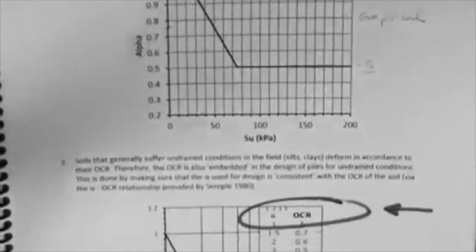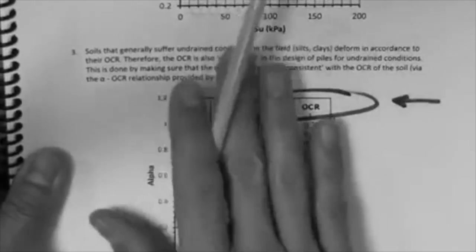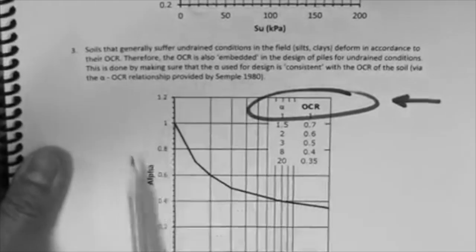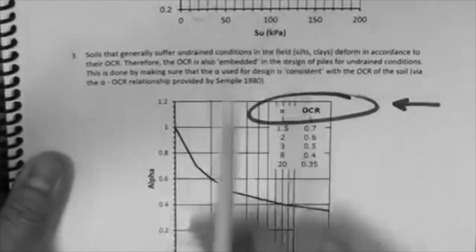Now, below this plot, there is another plot. We're going to talk about that later on, so you can ignore this for now, this OCR alpha plot. Just concentrate on this top one.